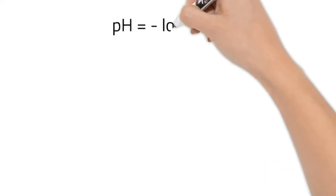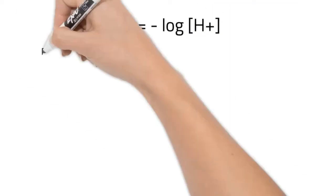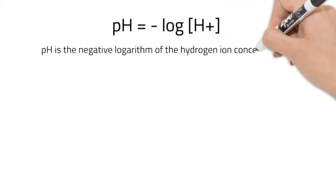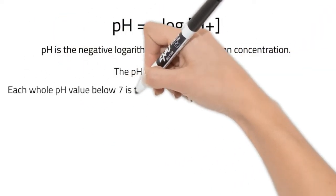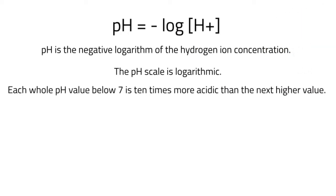We can calculate pH as it is defined as the negative logarithm of the hydrogen ion concentration of a solution. The pH scale is logarithmic and as a result, each whole pH value below 7 is 10 times more acidic than the next higher value.